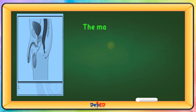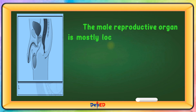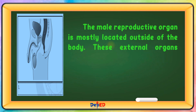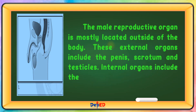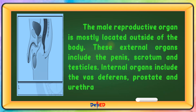The male reproductive organ is mostly located outside of the body. These external organs include the penis, scrotum, and testicles. Internal organs include the vas deferens, prostate, and urethra.